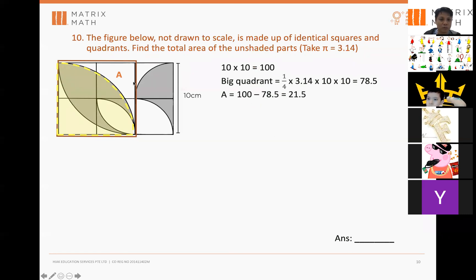And you subtract 100 minus 78.5. You get the boomerang A. You also notice over here, you got an identical boomerang. We call it B. So, B will also be 21.5.